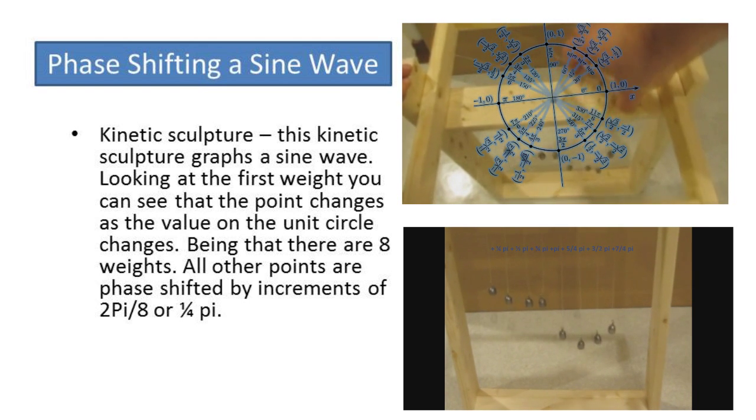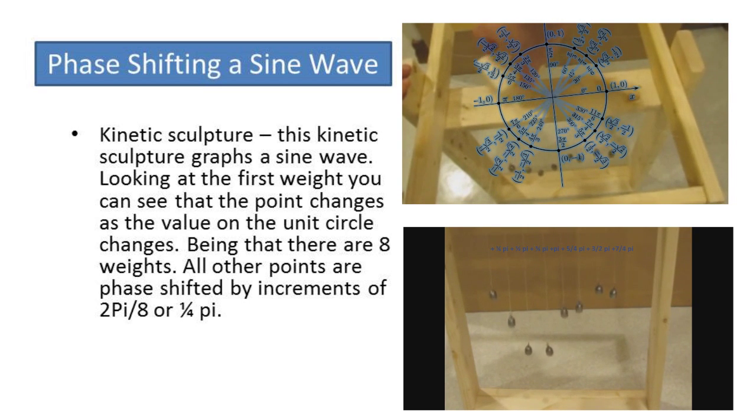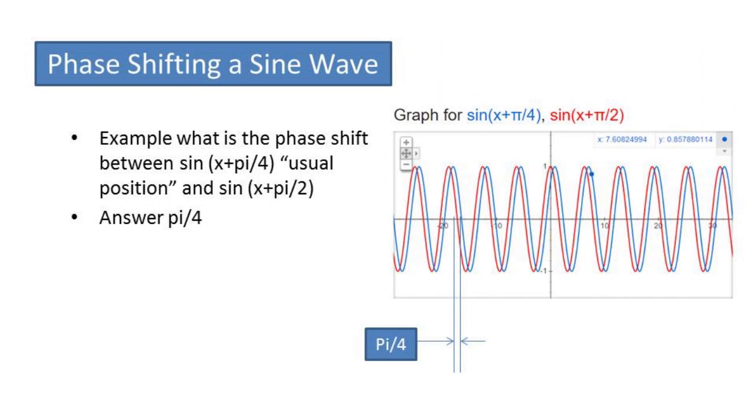All the weights are at a different phase in increments of pi over 4 to the first weight. Now to wrap things up let's do a quick example problem.